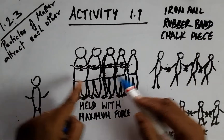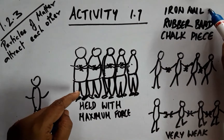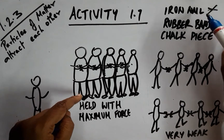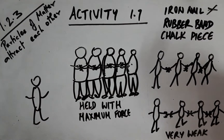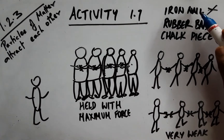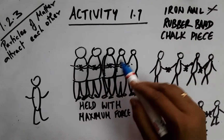We have a packed structure in the iron nail. We cannot break it, we cannot hammer it, we cannot separate or cut it. We cannot divide it.